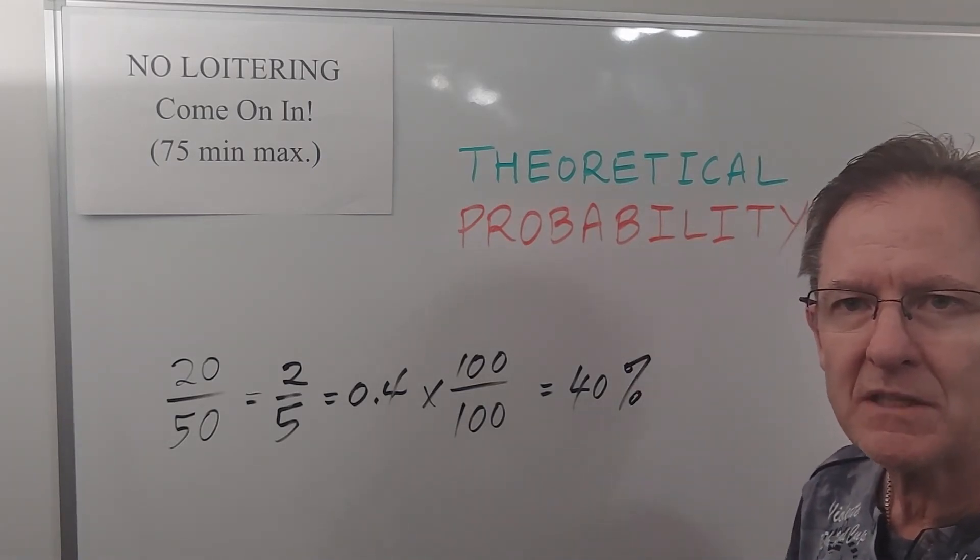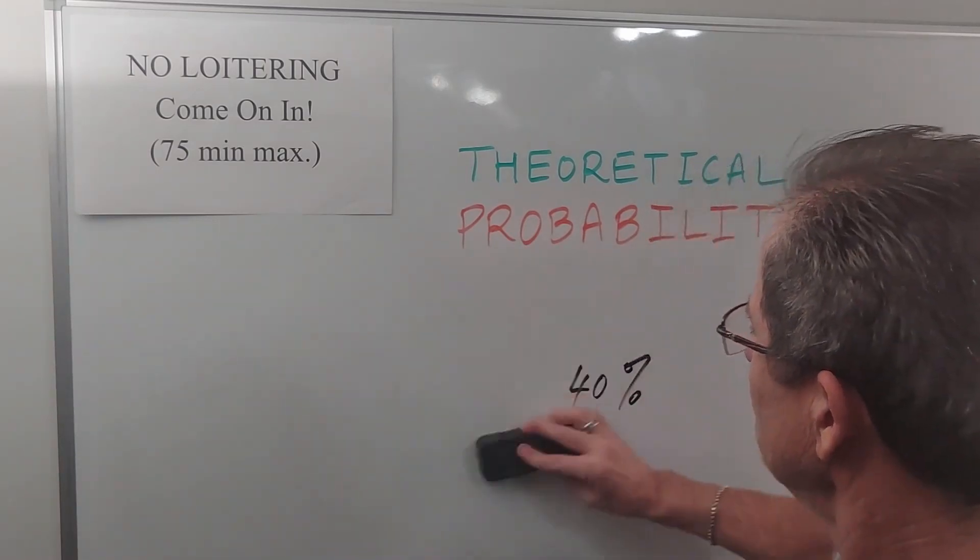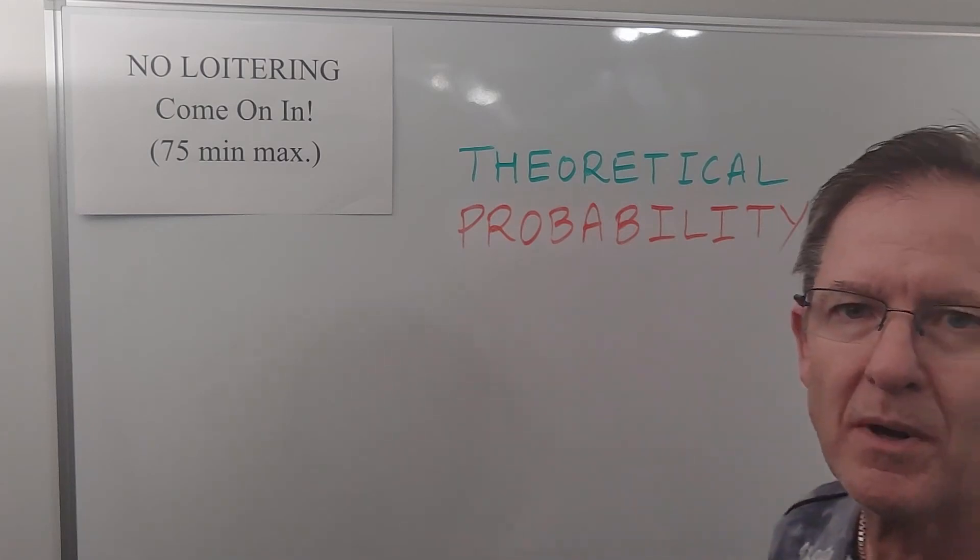So there are many different ways of expressing probability. Now let's talk about what should happen - that's theoretical probability.